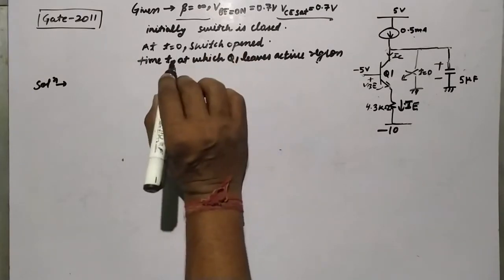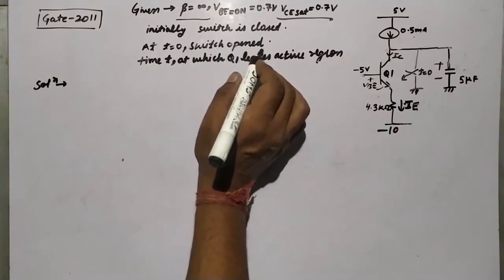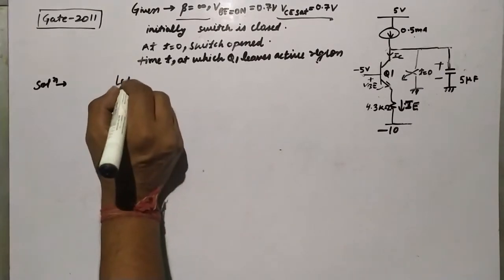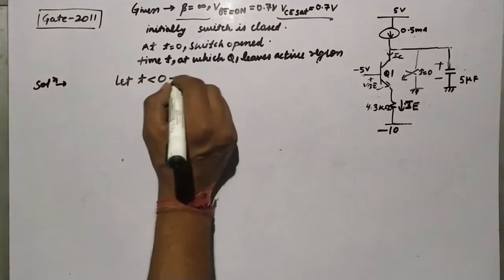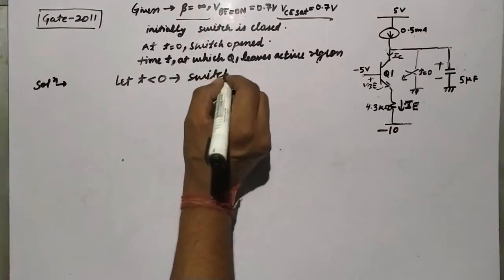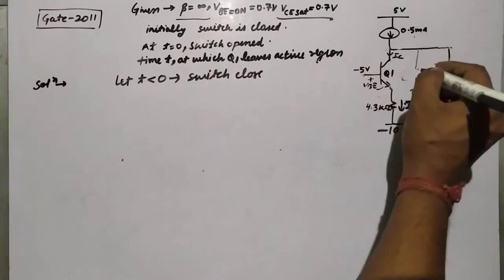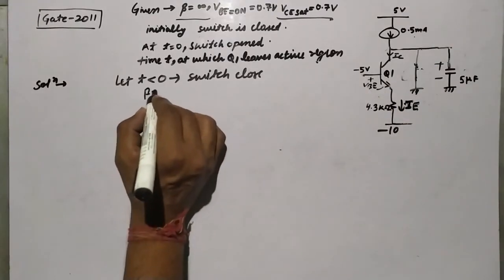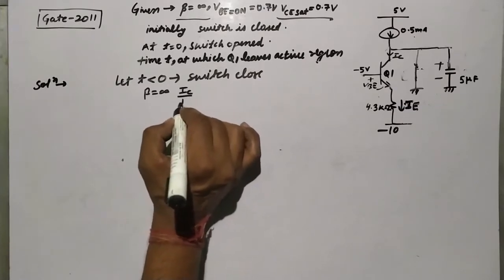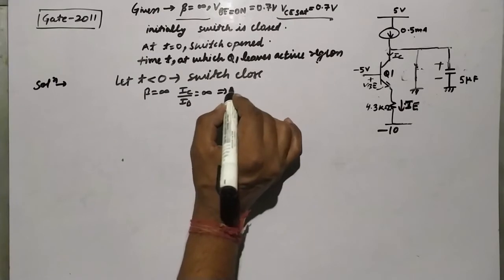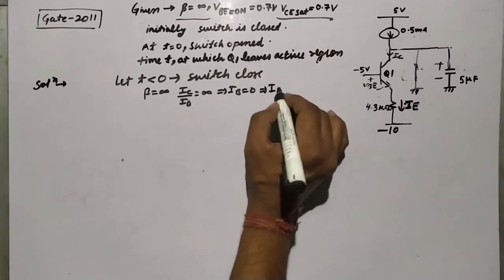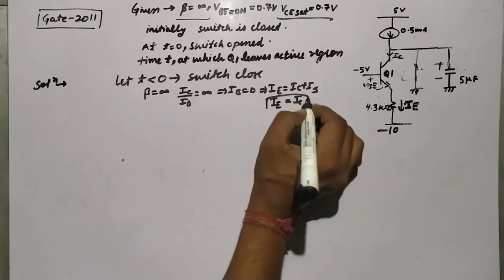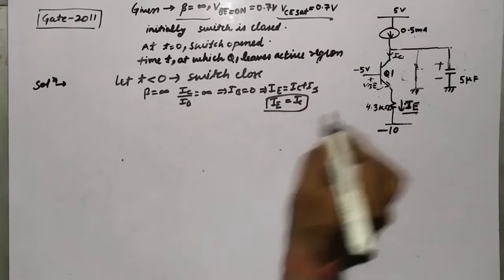Initially the switch is closed, and at t=0 the switch is opened. So for t less than 0, the switch was closed. We have to calculate the time t at which the transistor leaves the active region. For t less than 0, the switch is closed. Since β equals infinity, IC divided by IB equals infinity, so IB equals zero, meaning IE equals IC.